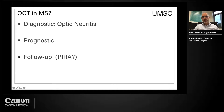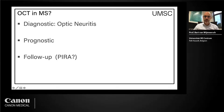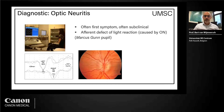You can use OCT in MS in three ways: the diagnostic way — one of the features often seen in MS on first symptoms is optic neuritis — also on a prognostic level, and then on follow-up of treatments over time, where we still lack good biomarkers to show neurodegeneration. The most common way of measuring optic neuritis is the visual evoked potential, which is still very sensitive for it.